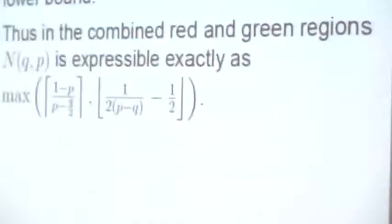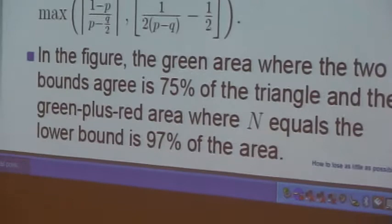In the figure, the green area where the two bounds agree is 75% of the triangle. And the green plus red area where N equals the lower bound is 97% of the area.